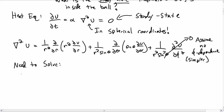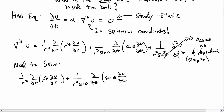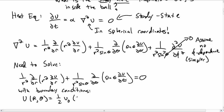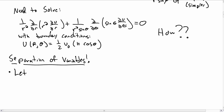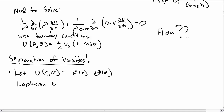You can generalize this if you want to. What we need to do is solve the r and θ components of the Laplacian — this partial differential equation — subject to the boundary condition that u(R, θ) = ½u₀(1 + cosθ). Since this involves a PDE with boundary conditions, we'll use separation of variables. We let u(r, θ) = R(r)·Θ(θ), with capital R and capital Θ as separate functions. Plugging this ansatz into the Laplacian, Θ(θ) comes out of the first term and R(r) comes out of the second term.